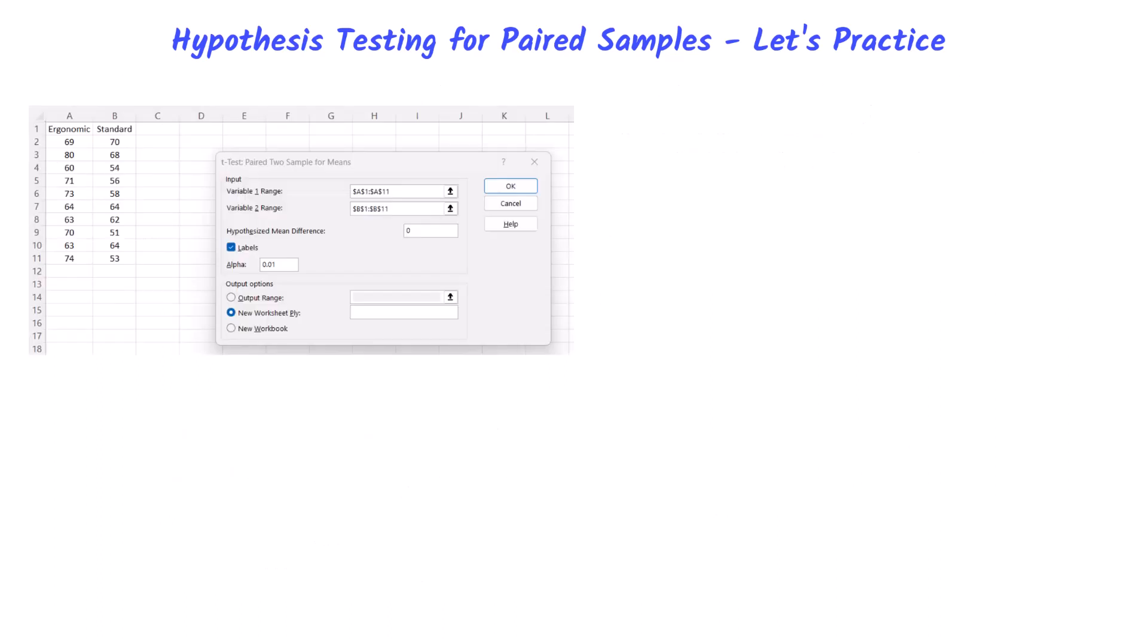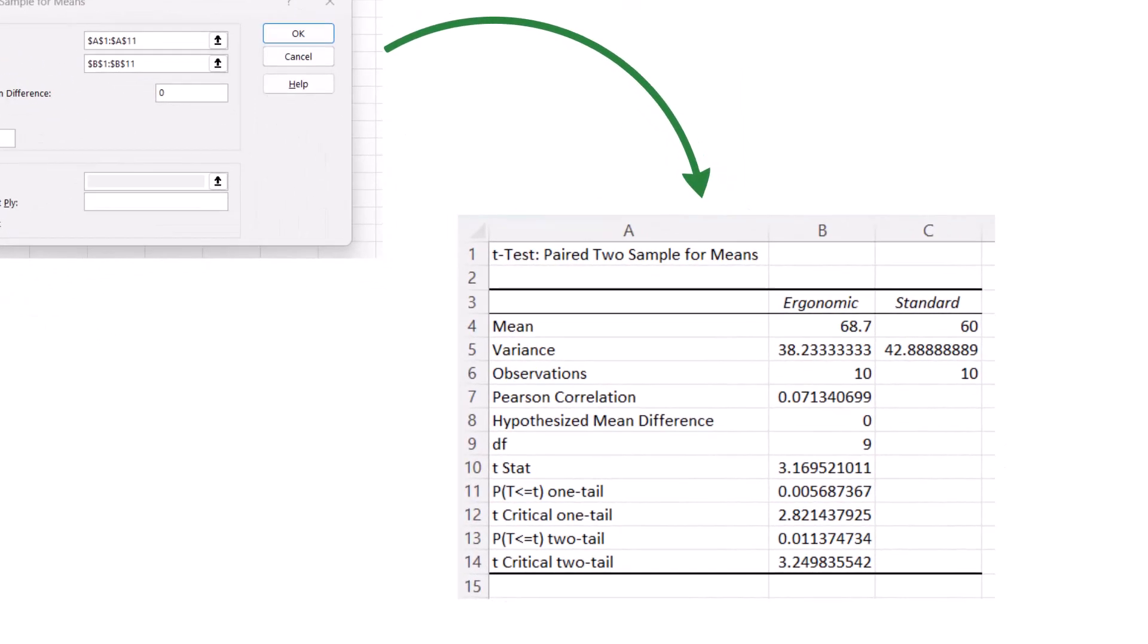Here is a screenshot of the t-test for paired two samples for means. I have entered in the sample data for both ergonomic and standard keyboard results for each administrative assistant. Then I entered the range for variable one and variable two here. I entered zero for the hypothesized mean difference. I checked the labels box because you can see I have included row one in my variable ranges and that has the text ergonomic and standard in it. Finally, I entered 0.01 since this was the alpha given in the problem and I clicked OK. And you'll get this output on a new sheet.